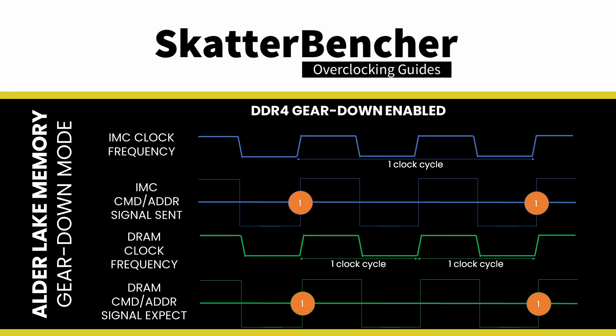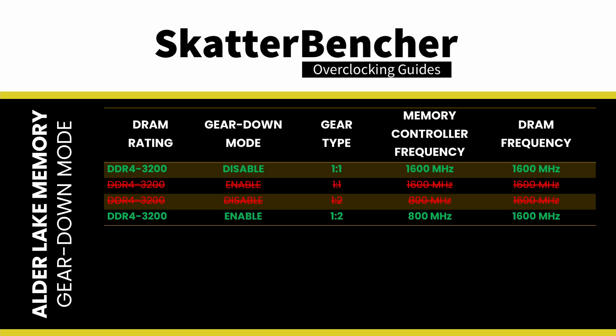Let's look at an example with DDR4 memory. As you can see from the table, the default operation for DDR4 is to have the memory controller and memory frequency run at the same frequency with Gear Down mode disabled. When Gear Down mode is enabled, the DRAM expects half the amount of command address signals, which opens the opportunity to reduce the memory controller frequency by half. This is the implementation we saw on Rocket Lake, and the reduced memory controller frequency vis-à-vis the memory frequency is the main reason behind its increased memory overclocking capabilities.